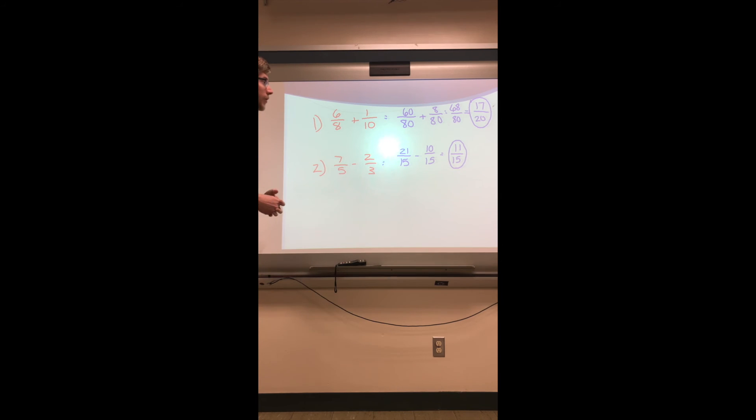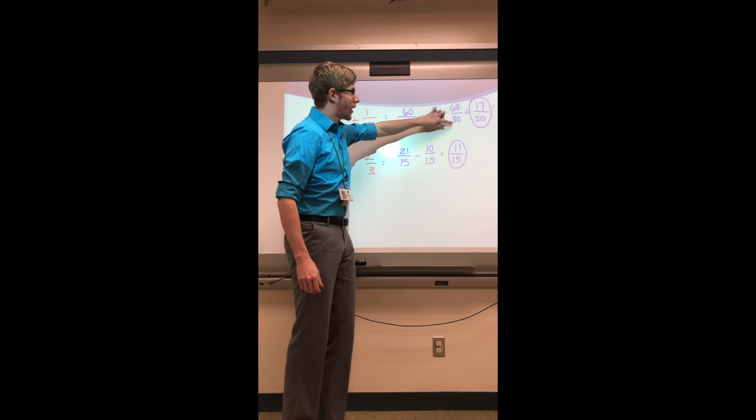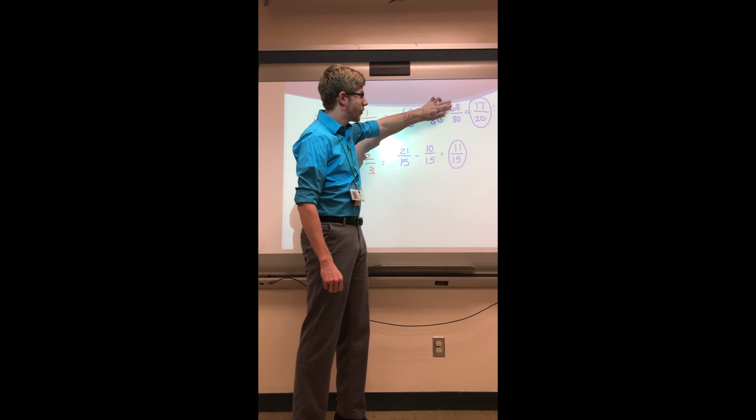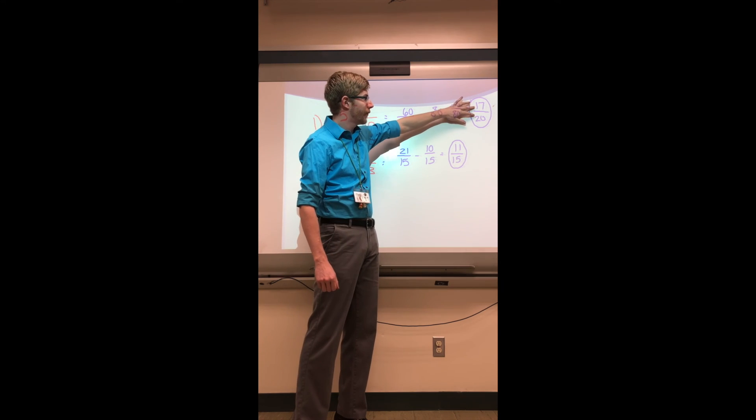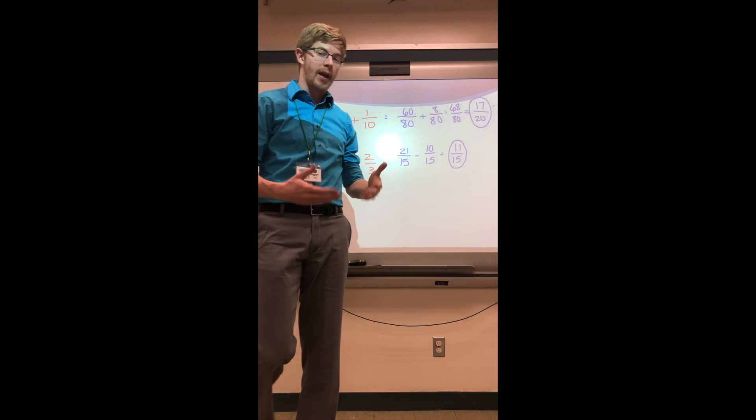Okay, now that you've unpaused, you can see the answers here. For the first one we get 68 over 80, and like I said one of these is going to incorporate reduction, so both of these numerators and denominators can be divisible by four, so that's going to reduce to 17 over 20. And then your last one, straightforward, can't be reduced. Find that common denominator, subtracting, you get 11-fifteenths.